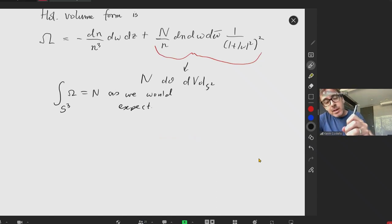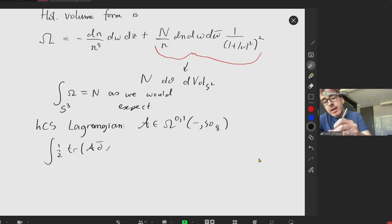So recall, the holomorphic Chern-Simons action. We're going to have a gauge field, because there's a 0,1 form in this geometry, and it looks like half integral trace A d-bar A plus one over sixth trace A, A, A. And this whole thing is hit with the holomorphic volume.